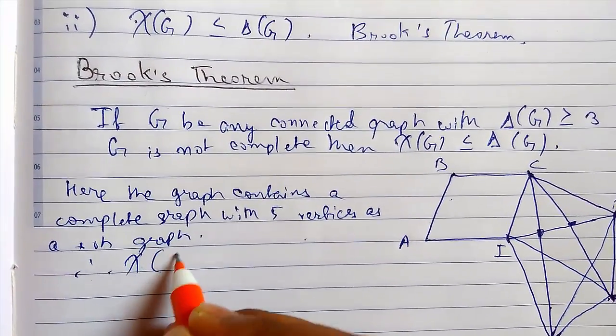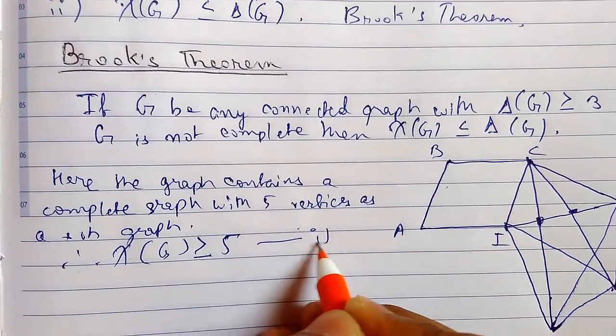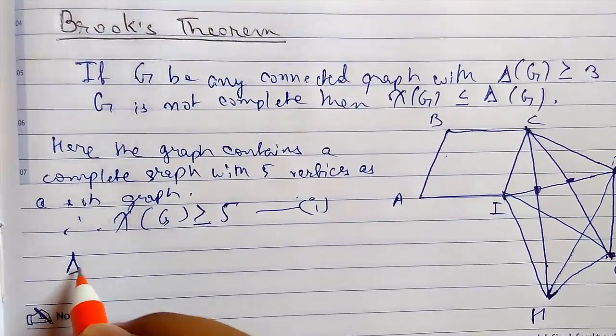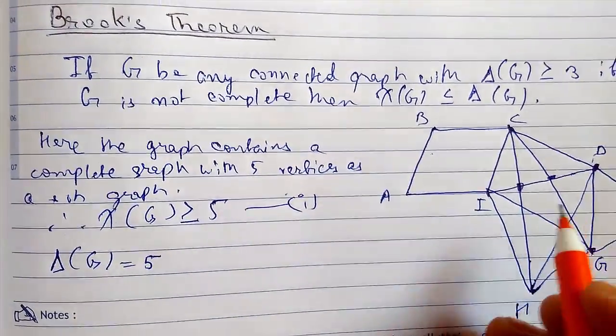Therefore χ(G) must be greater than equals to 5. This is equation number 1. Moreover we can see that Δ(G) is equal to 5. If you calculate Δ(G) is 5.